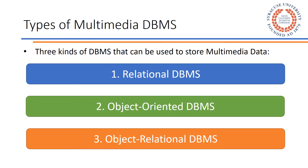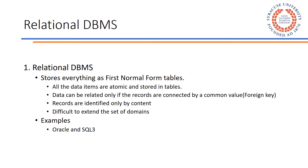There are three types of multimedia database management systems: relational database management system, object oriented database management system, and object relational database management system. The relational database management system basically stores everything as first normal form tables. All data items are atomic and can be related to another record in the table using the foreign key concept. All records are identified by the content itself, and it becomes difficult to extend the set of domains. Oracle DBMS and SQL 3, which is an extension to standard SQL, serve as examples.